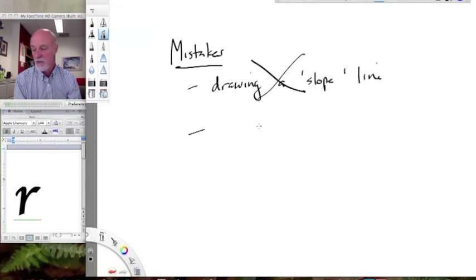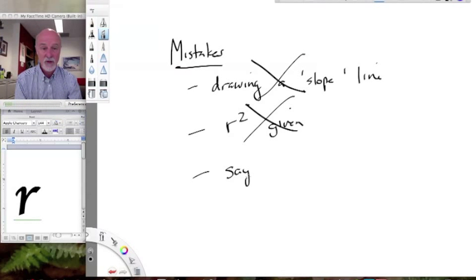Also, another mistake I commonly see is an r square is given. Never give an r square when you're doing correlation. Give an r value instead. So that's a problem.